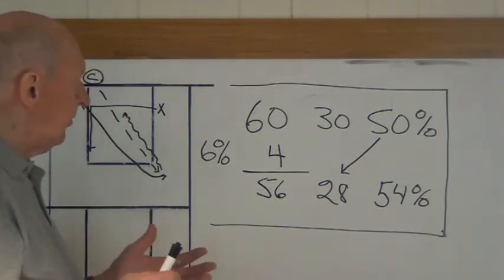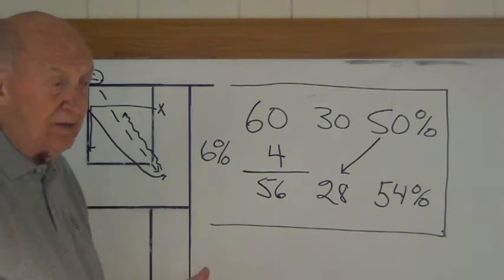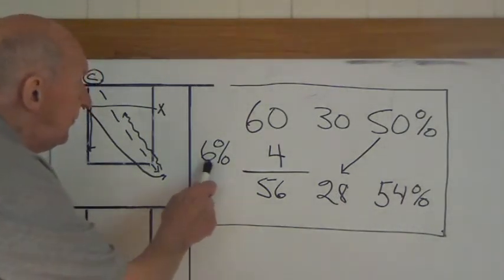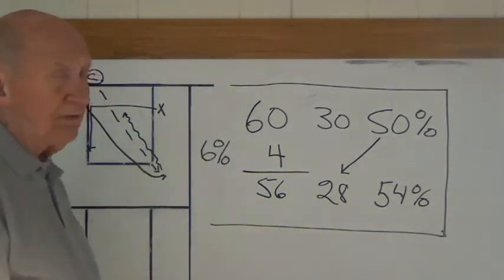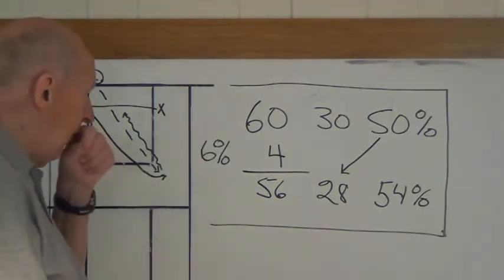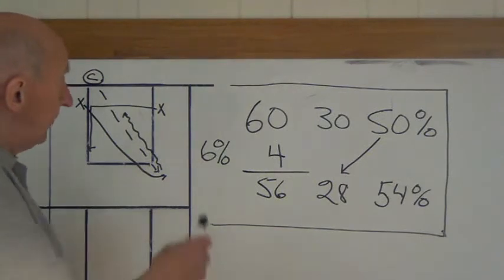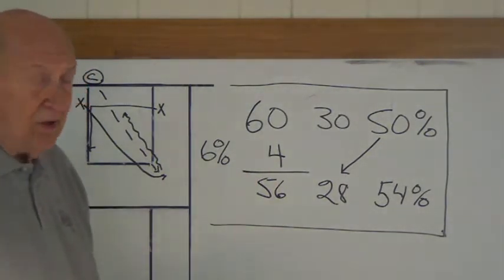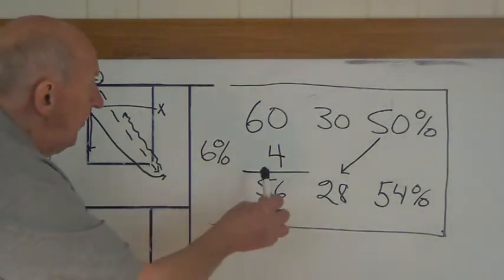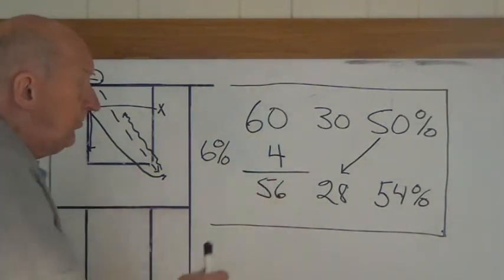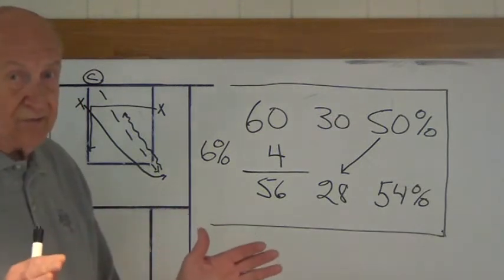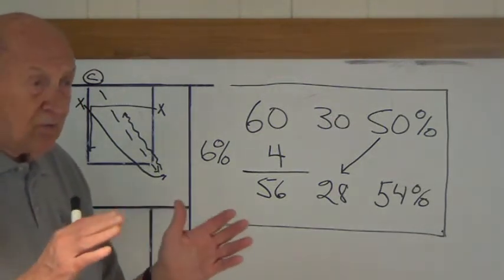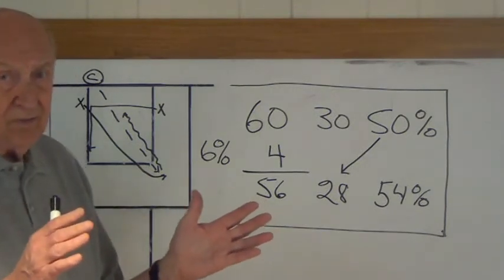Now, if you're a pretty good shot blocking team, you will probably be around 6% of the shots that your opponents take that you block. Well, 6% of 60 is just four blocked shots. That's all. But what happens is when you block a shot, it's like a turnover to me, because you take away the fact it doesn't even get to the rim.